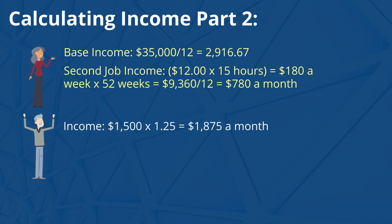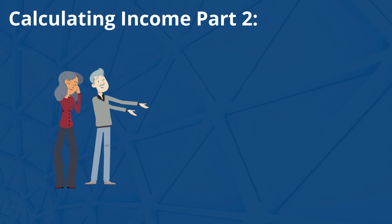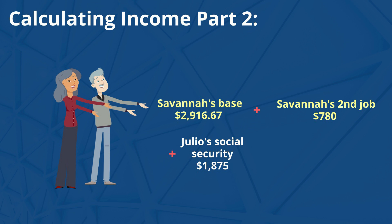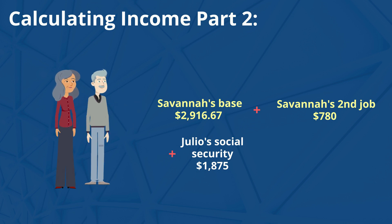For Julio's income, we'll take his $1,500 and multiply it by 1.25, which is equal to $1,875 a month. Now let's add all of them together. Savannah's base income of $2,916.67, plus her second job income of $780, plus Julio's Social Security grossed up of $1,875, is equal to $5,571.67 for their total monthly income.